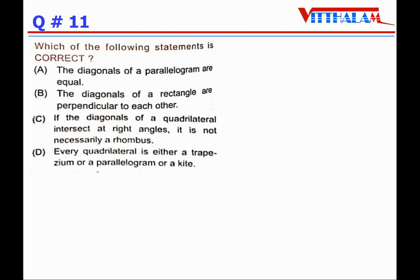Which statement is correct? A: Diagonals of a parallelogram are equal — not necessary. B: Diagonals of a rectangle are perpendicular — true only for square and rhombus, not rectangle. C: If diagonals of a quadrilateral intersect at right angles, it is not necessarily a rhombus — it may also be a square. D: Every quadrilateral is a trapezium or parallelogram or kite — not necessarily. Answer is C.